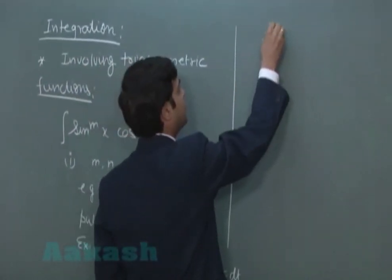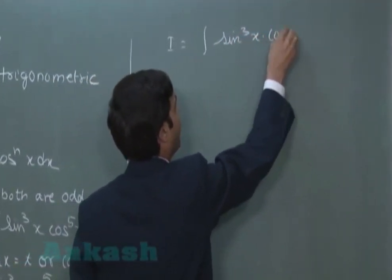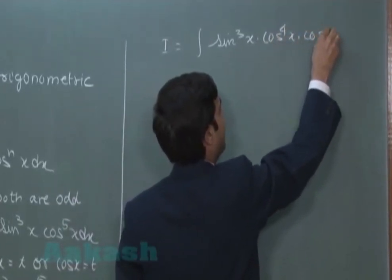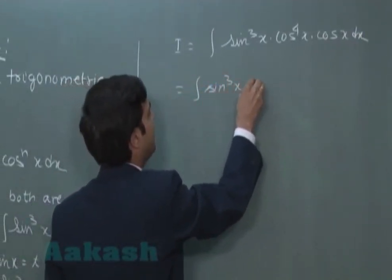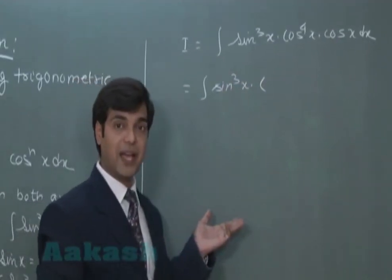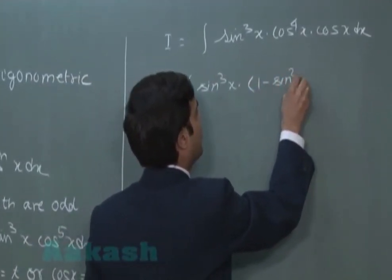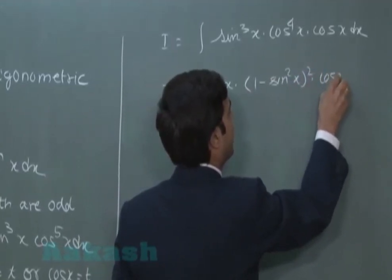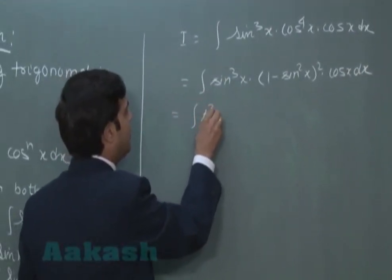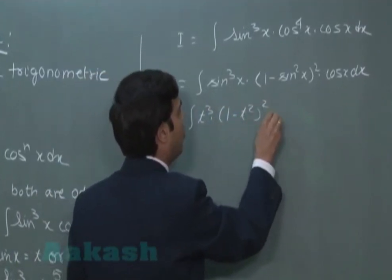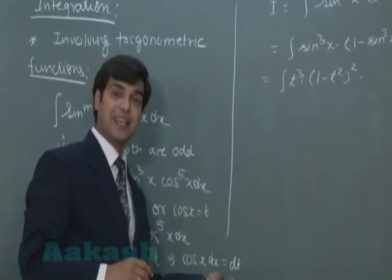What we will be left with? Our integration term changes to sin³(x) cos⁴(x) cos(x) dx or can be rewritten as sin³(x) cos⁴(x) can be converted in terms of sin(x) as (1 - sin²(x))² cos(x) dx. Now, substituting sin(x) as t, we get t³ into (1 - t²)². This is clear. Cos(x) dx is equal to dt.